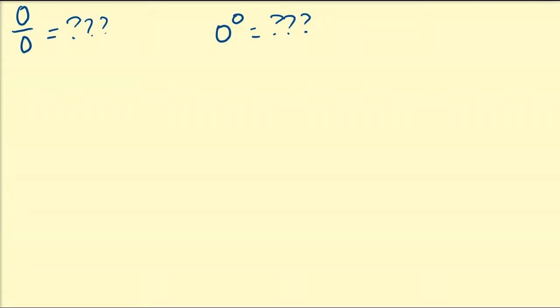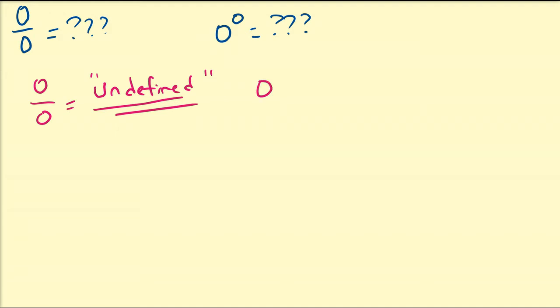Hello there, and in this video we're going to discuss probably one of the most commonly discussed or argued about problems in mathematics, and that is the question: what is zero divided by zero? Another common and equivalent question is that of what is zero to the power of zero? These two are not exactly the same expression, but they are definitely going to be related. The correct and accepted answer across the mathematical community is that both of these expressions are undefined — zero divided by zero and zero to the power of zero are both undefined expressions.